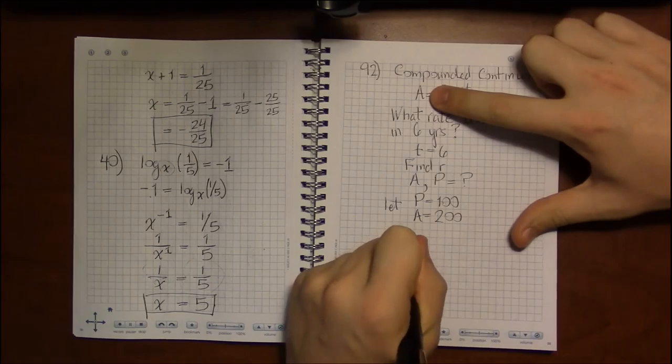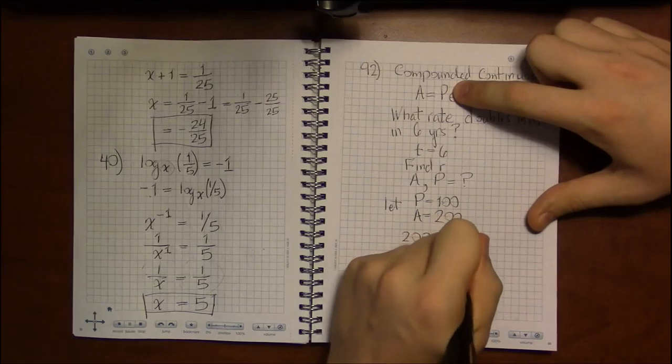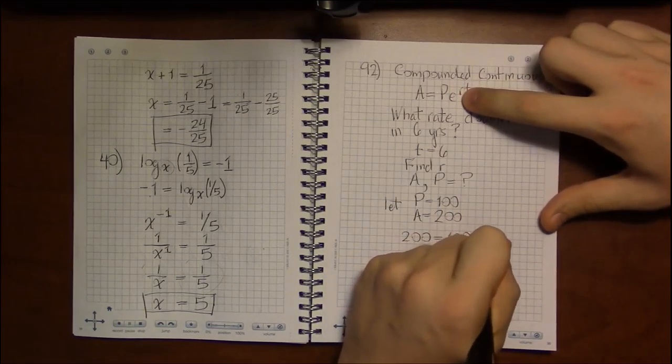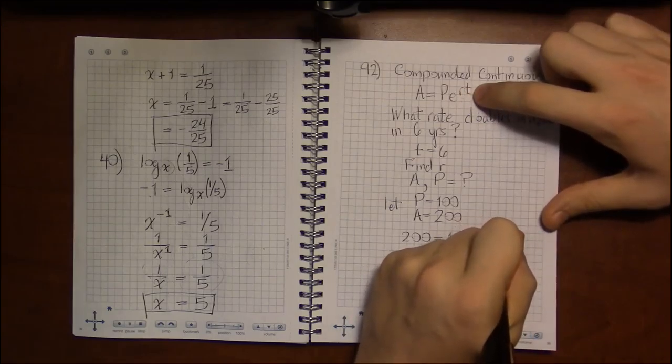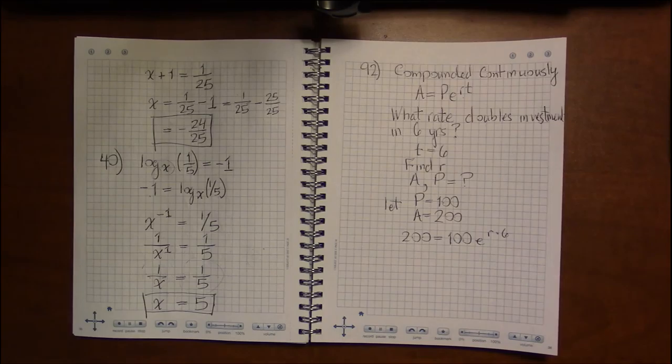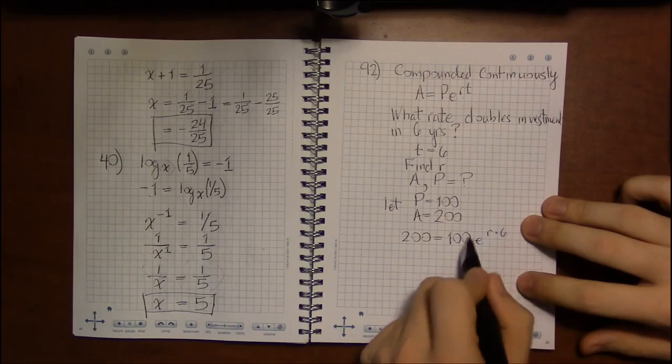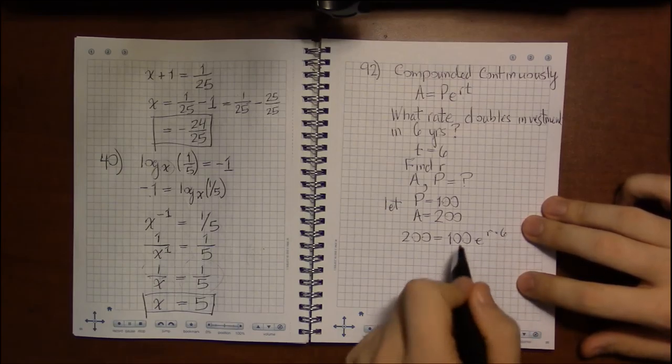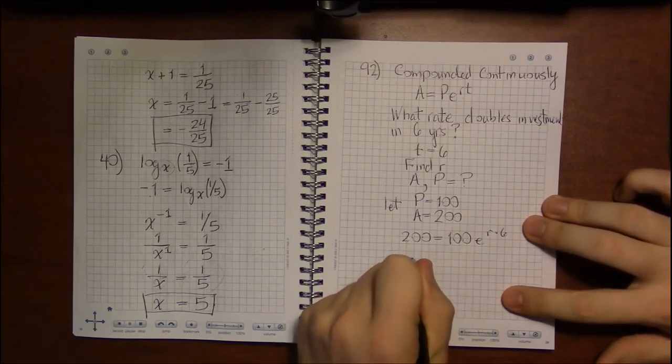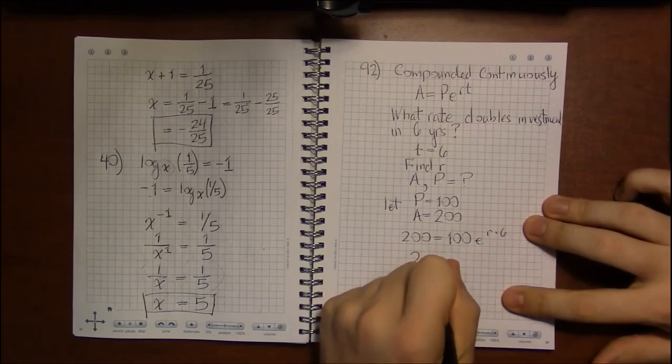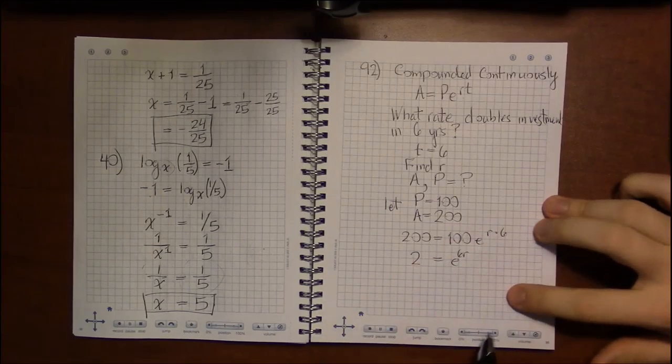So we have 200 for A, 100 for P, E is its own weird number. We're trying to find out what R is, and we know T is 6. So the thing to do here is to get the exponential by itself. So divide by 100. And 200 divided by 100 is just 2. And R times 6 we write as 6R.